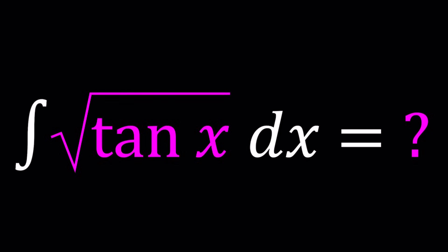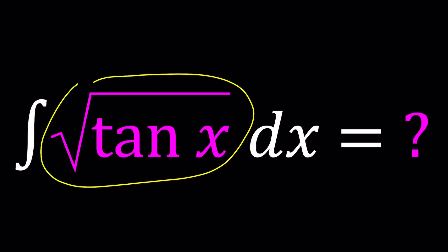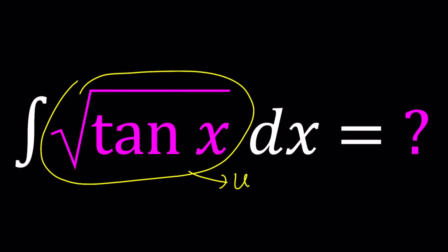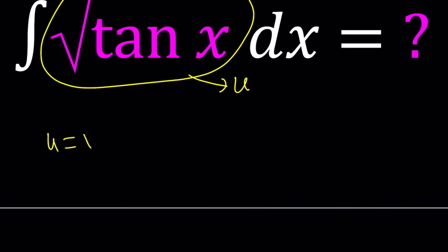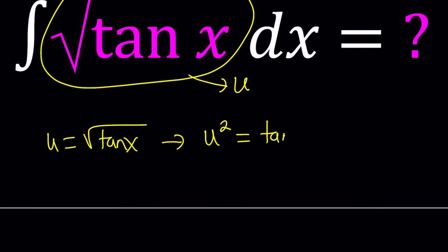First of all, I'm going to use substitution. So let's go ahead and set the square root of tangent x equal to u. So u is equal to the square root of tangent x, and then I'm going to square both sides and get u squared equals tangent x. Now when I use the method of substitution with integrals, I want to get dx as well — so du and dx, how are they related?